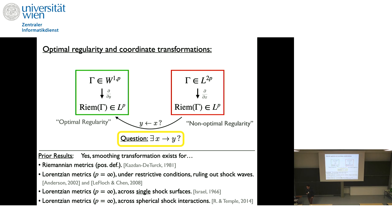What applies to shockwaves in Lorentzian geometry? A very classical and famous result — Israel's junction conditions — addressed shockwaves with bounded curvature and no delta peaks, showing you can regularize the metric. But that only applies to single shock surfaces. The shockwave solutions we're interested in, from the existence theory via the Glimm scheme, contain many shock wave surfaces that can intersect, and the intersection points can actually accumulate, creating very complicated patterns — like waves breaking at the beach and reflecting off walls.